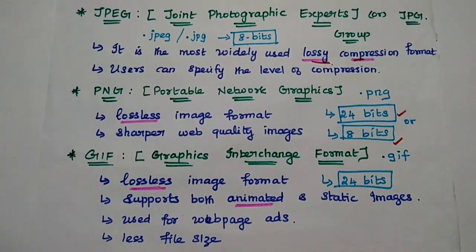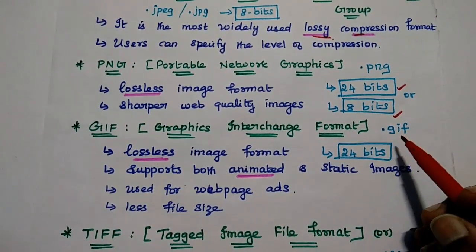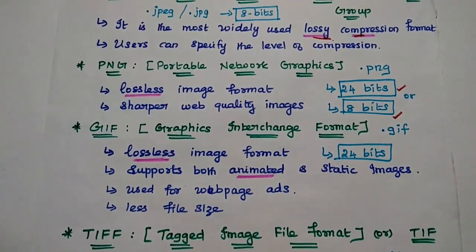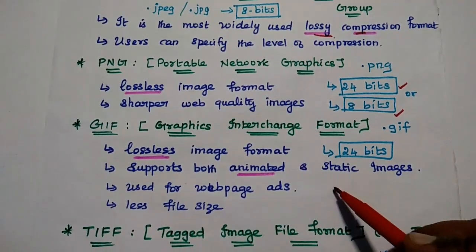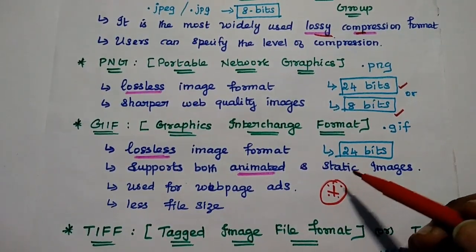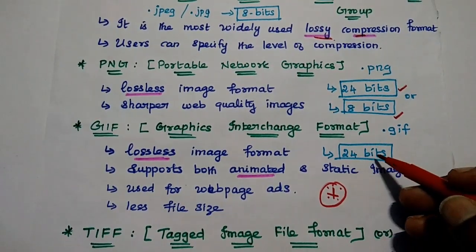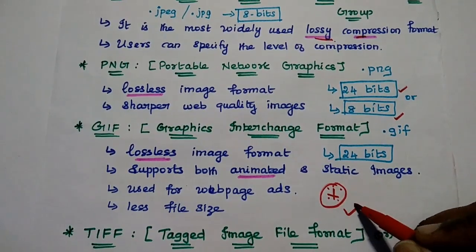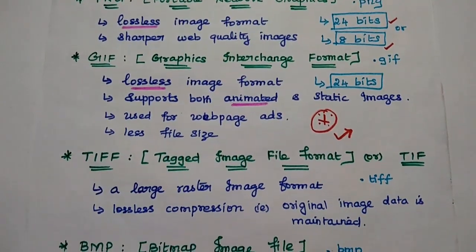Next one is GIF, that is Graphics Interchange Format. Simply we can say .gif. Here also we are using lossless compression format. It can support both animated as well as static images. That is the major advantage of this GIF. Animation is possible only with this GIF, not with that JPEG. Here 24-bits are used to represent a pixel value. It provides a high quality animated images for webpage ads and also provide less file size.